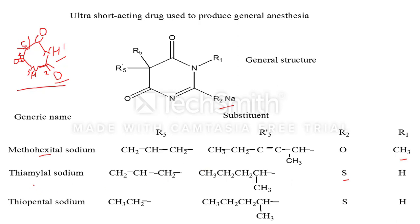The second example is thiamylal sodium, where the oxygen at position two is replaced by sulfur, and R1 is hydrogen. The third example is thiopental sodium, where at position five, an ethyl group is substituted and an isopentyl group is at R5'. The second position contains a sulfur group substituted for oxygen, and the hydrogen at position one remains. This is the general structure showing R1, R2, and R5 substitutions of ultra-short acting barbiturates.